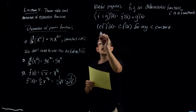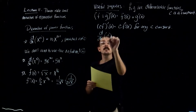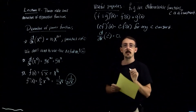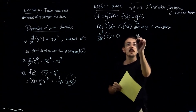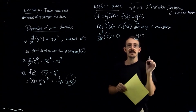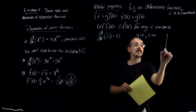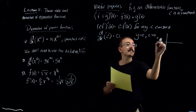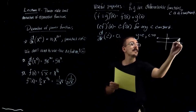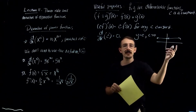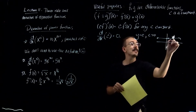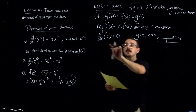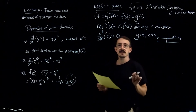Third: the derivative of a constant c is just zero. Why? If you have y = c, a horizontal line, the slope is zero. So the derivative of any constant is just zero.